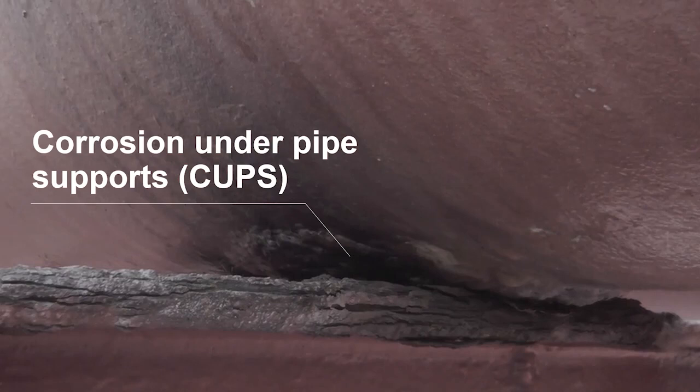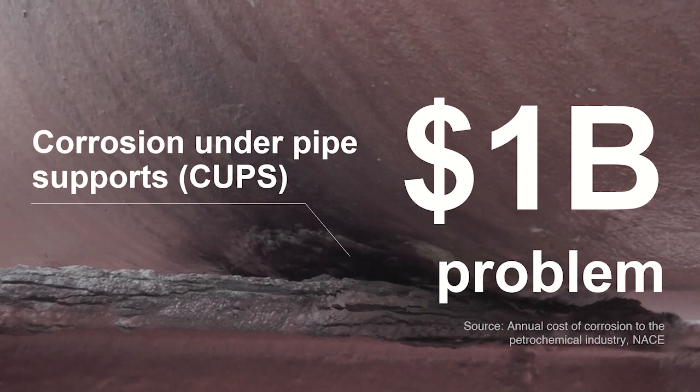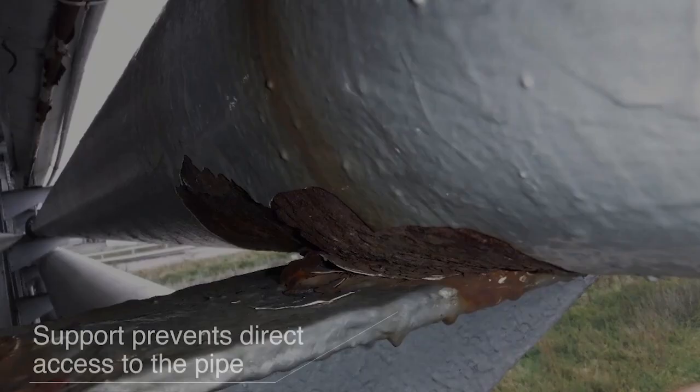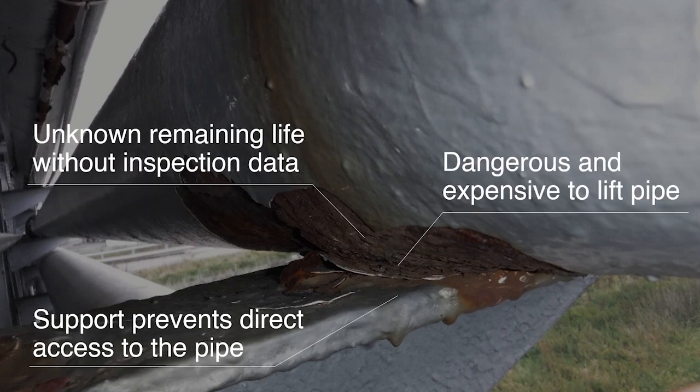Corrosion under pipe supports, or CUPS, form a significant portion of the billion-dollar corrosion challenge that the oil and gas industry faces. Operators of oil and gas facilities are aware of the big part that CUPS play in their integrity management challenge.